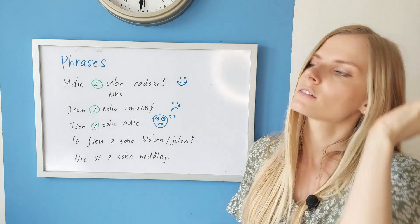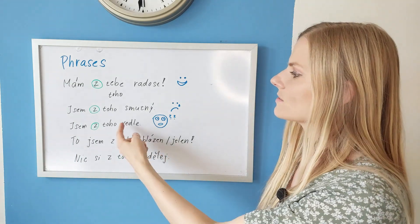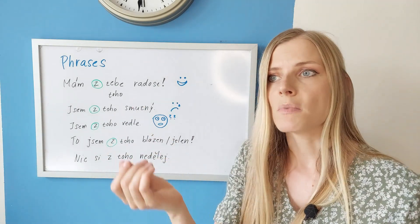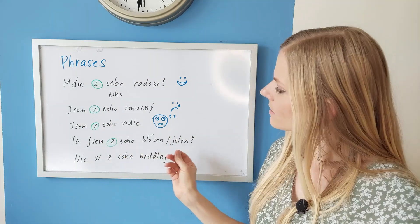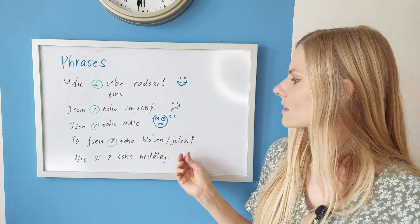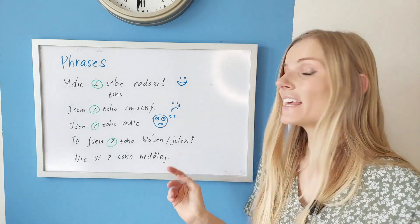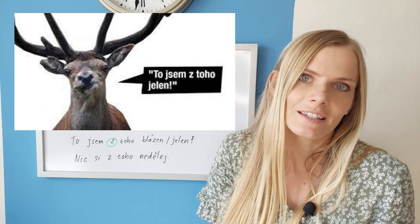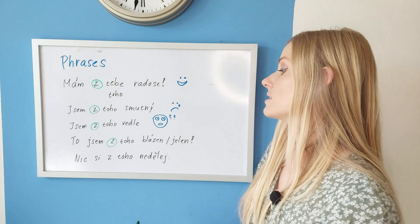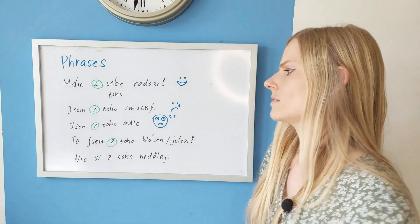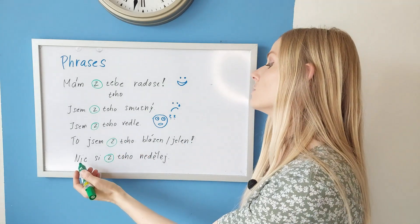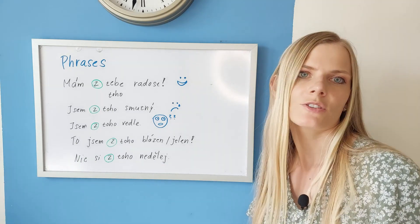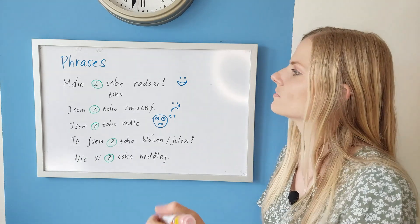Sem z toho vedle - I am confused, I am puzzled. Z toho, from it. Vedle means next to. So I am so thrown off by something that happened that I'm surprised and this threw me off. To sem z toho blázen - I'm going insane, this makes me crazy. Blázen means a crazy person. And another nice expression: To sem z toho jelen - jelen is a deer. You can imagine a deer staring at the light. And if you want to comfort somebody you can say nici z toho nedelaj - don't worry about this, it'll be fine. Literally don't make anything out of this.